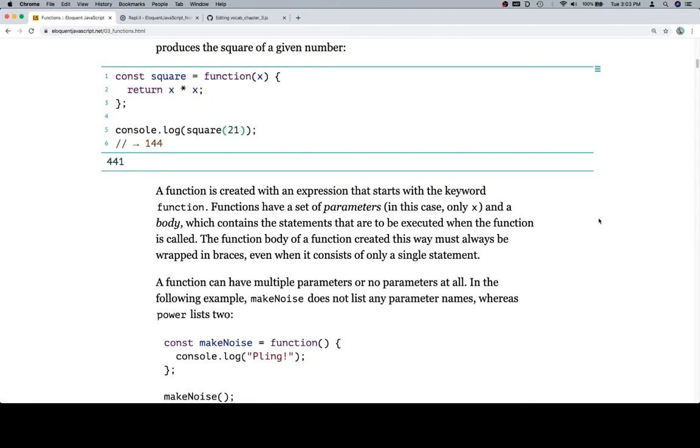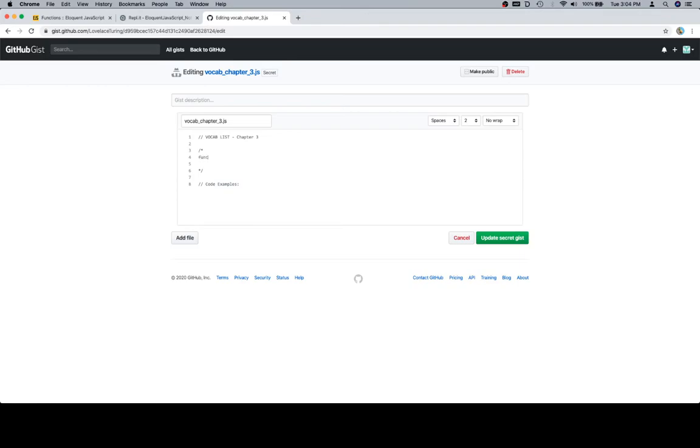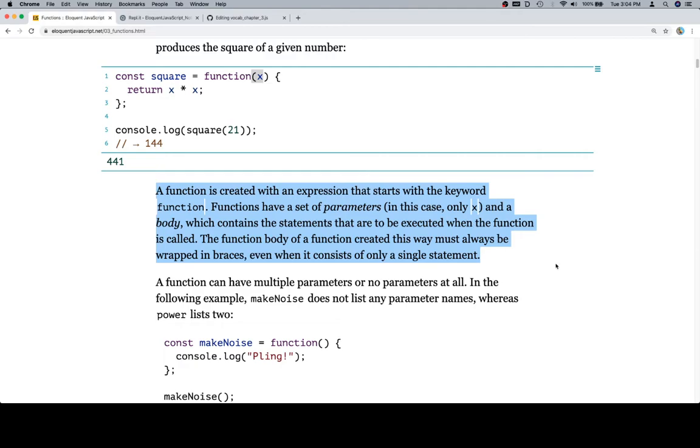A function is created with an expression that starts with the keyword function. Functions have a set of parameters, in this case only x, and a body, which contains the statements that are to be executed when the function is called. The function body of a function created this way must always be wrapped in braces, even when it consists of only a single statement. I'm going to go ahead and say that that entire thing might be useful just as a definition of function. So I'm going to go ahead into our vocab list. I'm going to say function. So that's the first addition to our vocab list.